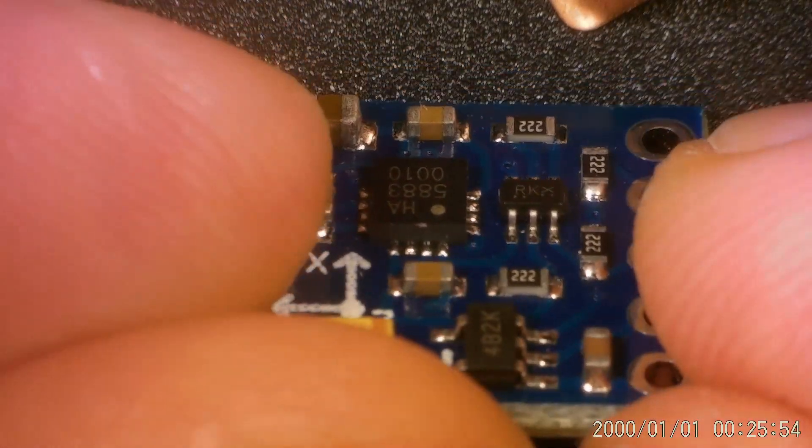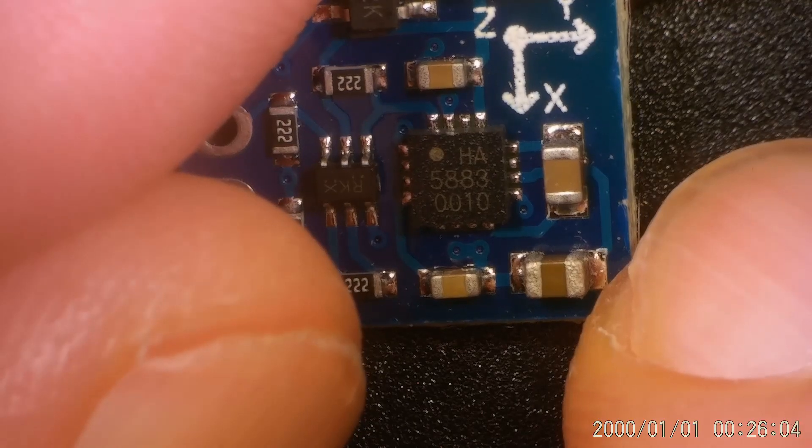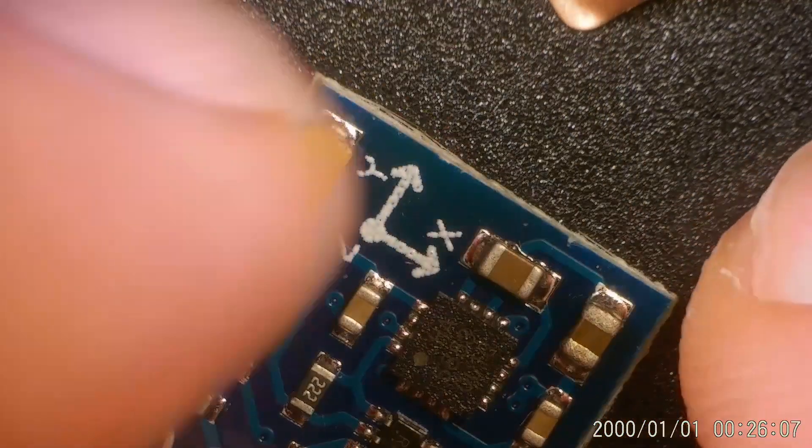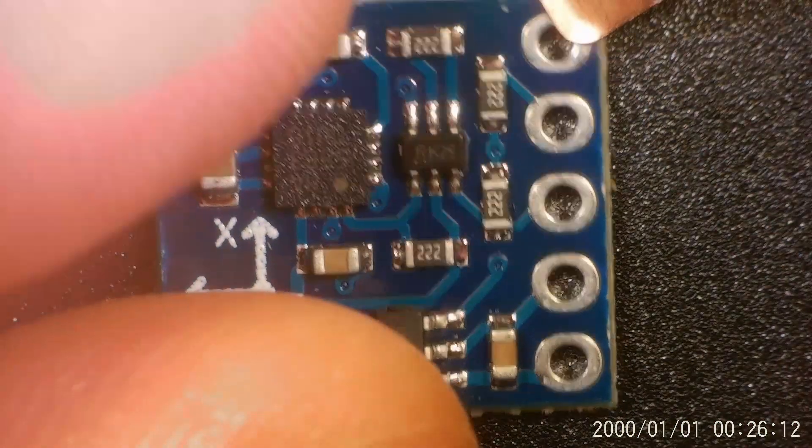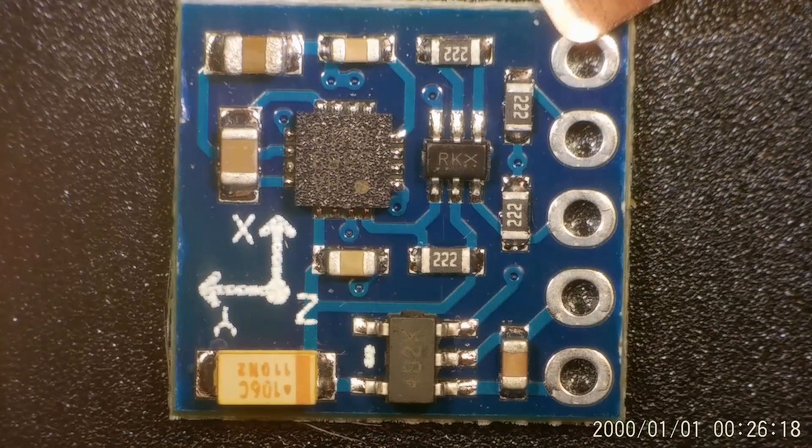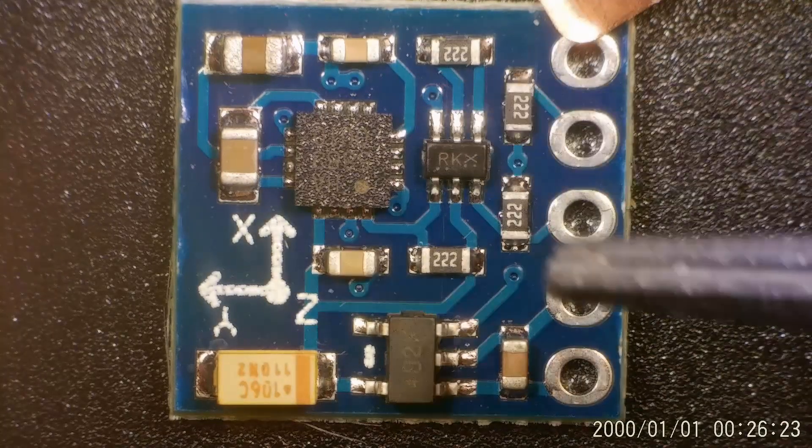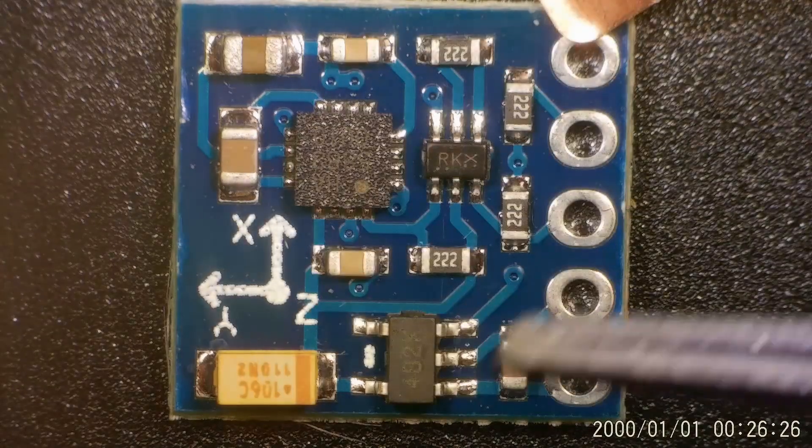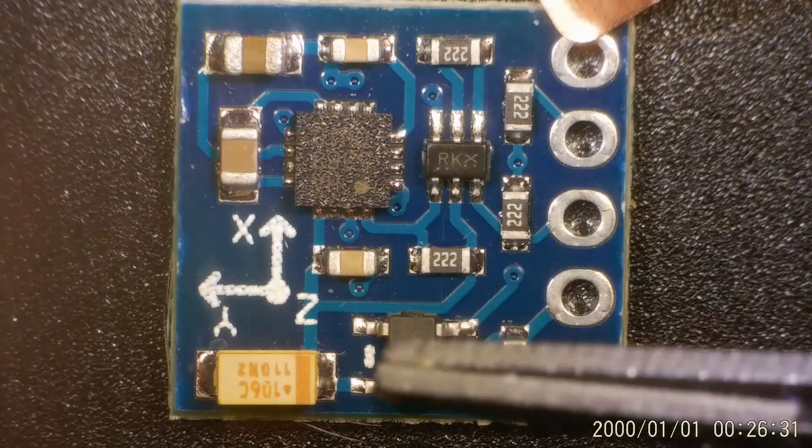And then we have here our QMC5883L. There it is. It's marked HA5883. And that's a licensed build, so really officially a licensed build. Honeywell HMC5883L licensed build in China, of course.